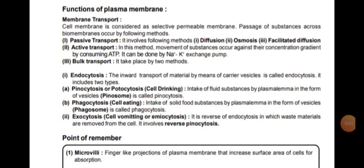Now we discuss the functions of plasma membrane. Cell membrane is considered a selectively permeable membrane; passage of substances occurs across this biomembrane by two methods: active transport, passive transport, and bulk transport.